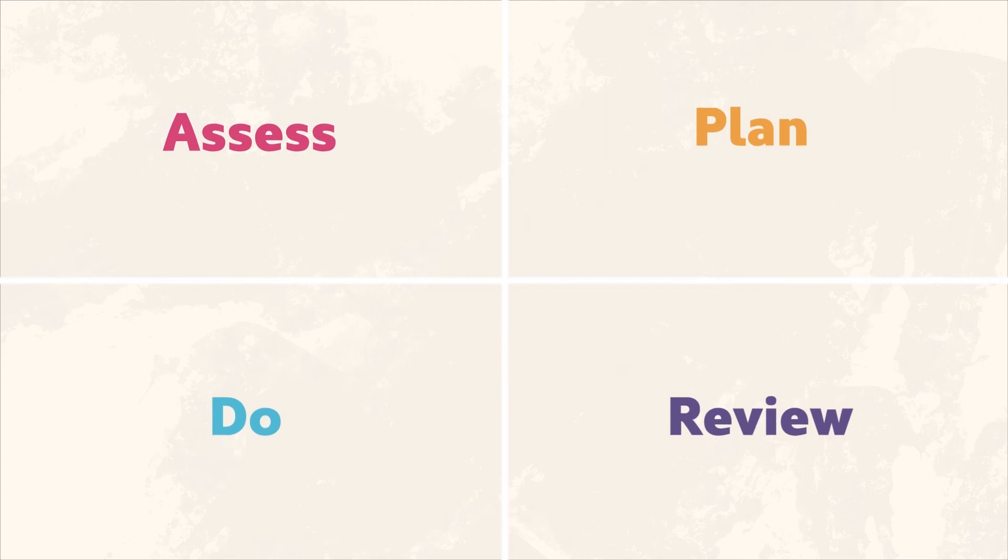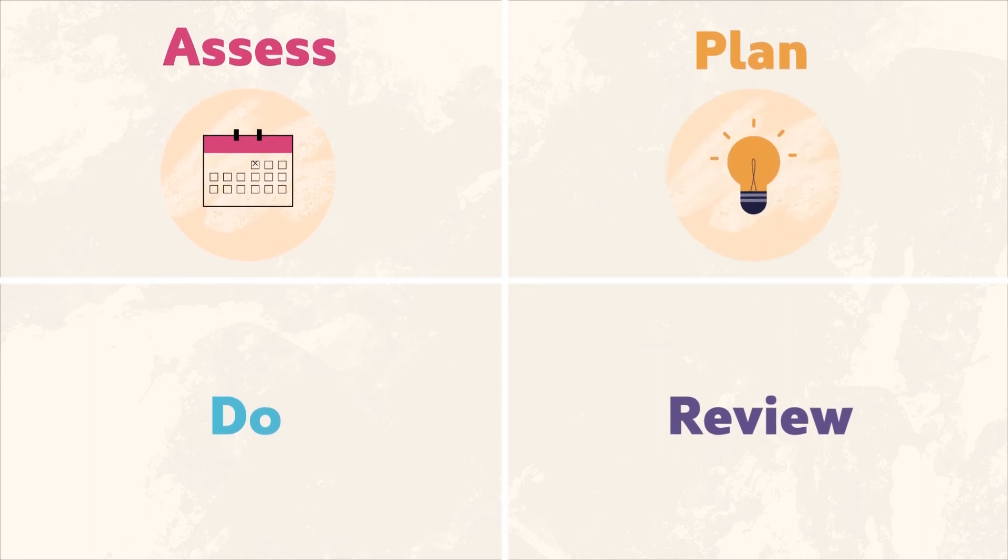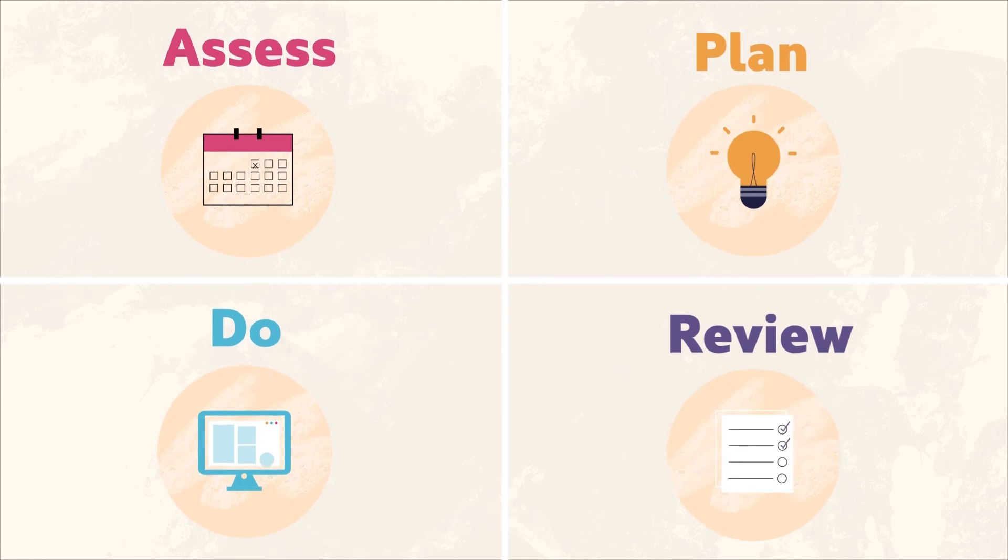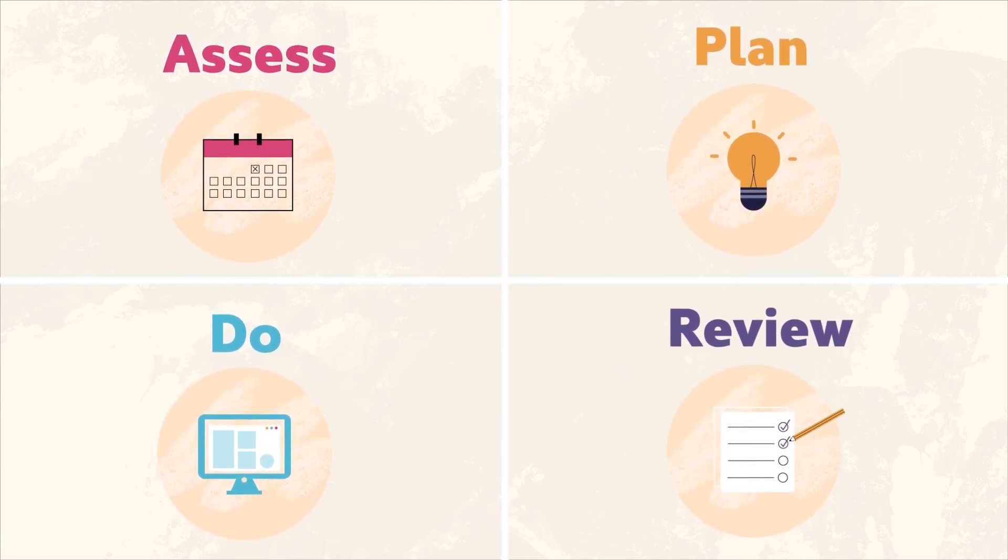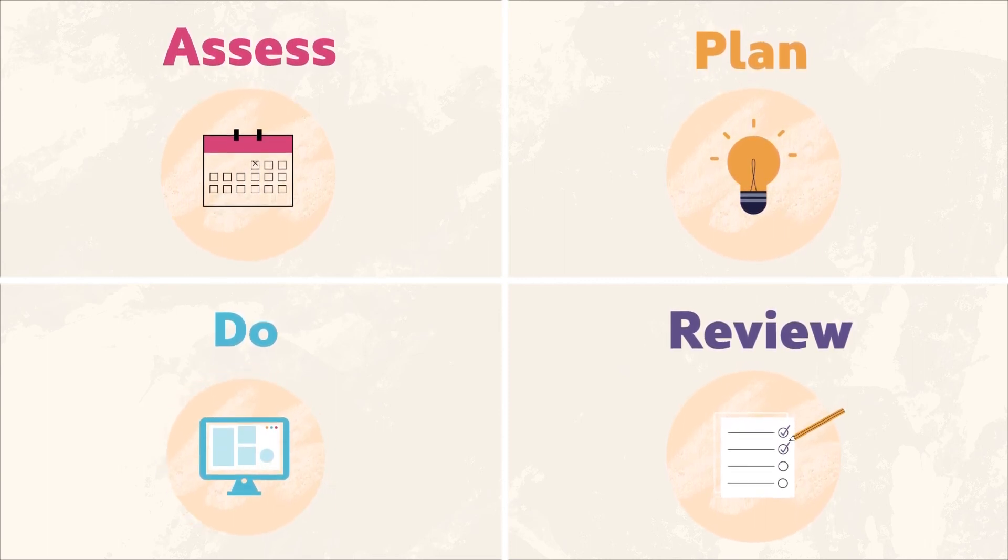This four-step plan will work out the specific support your child may need by checking their progress, outlining the goals they'd like to reach, setting up the support and reviewing it regularly with teachers to see if it still works for your child. This process can be repeated and changes made when necessary.